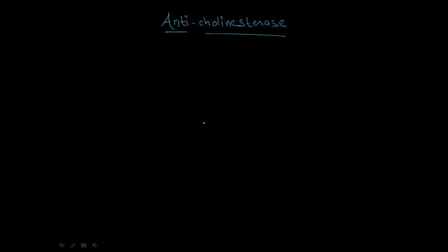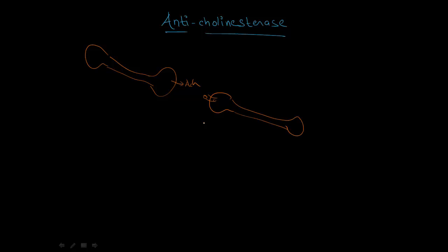In the last videos we talked about the directly acting cholinergic drugs, and in this video we are going to talk about the indirectly acting cholinergic drugs, or they are called anticholinesterases. So let's have one neuron which can produce acetylcholine, and let's have another neuron which has a nicotinic receptor. In the synaptic cleft we are going to have a special enzyme called anticholinesterase.